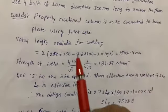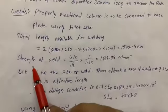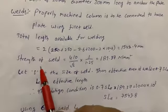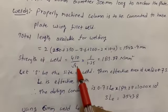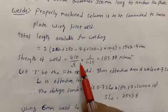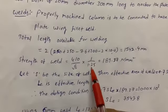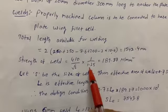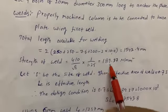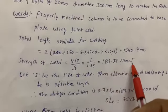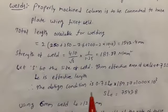The code specifies the formula for weld strength: f_u / (√3 × γ_mw), where f_u = 410 N/mm² and γ_mw = 1.25 from Table 5. This gives a weld strength of 189.37 N/mm². Next we need to determine the size of the weld.